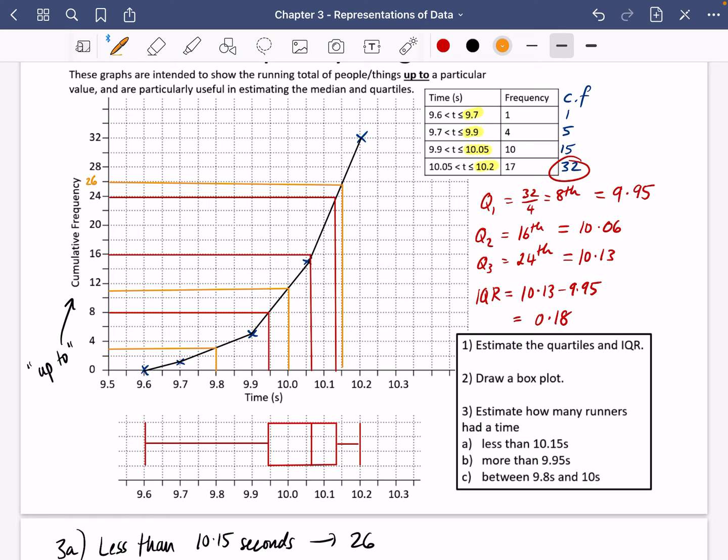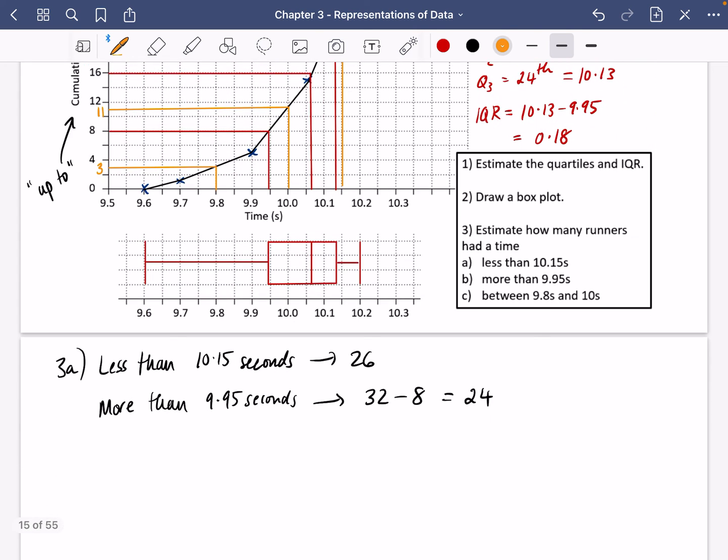So let's just add some of those times on. We've got 3 and we've got 11. So I think you can see that the in-between, between 9.8 and 10 seconds, will be the difference between 11 and 3. So that was 3b and this is 3c.